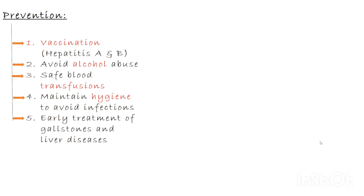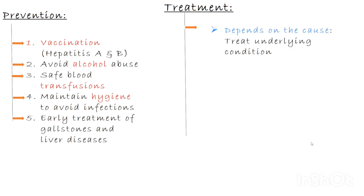Jaundice itself is not a disease — it is a sign of an underlying condition. So the main goal of treatment is to find and treat the cause. In pre-hepatic jaundice, meaning excessive breakdown of RBCs, the focus is on treating the underlying blood disorder. For example, in malaria we give anti-malarial medication; in sickle cell disease or thalassemia, supportive treatment and sometimes blood transfusions are used.